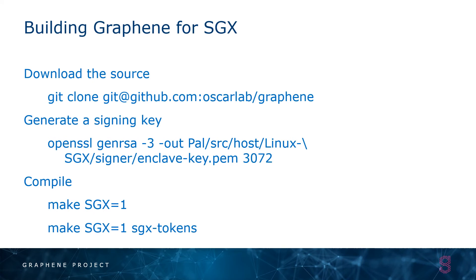The steps for building Graphene are relatively straightforward. First, you download the source using a git clone. One new step is that to sign your enclaves, you need to generate a signing key using this command, which is also in the README. From there, you do a regular compilation with the flag SGX=1 to build in SGX mode versus non-SGX mode. Finally, there's a step of creating SGX tokens, which generates all of the necessary signatures to run in SGX.